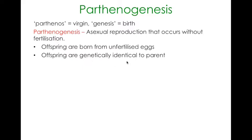Parthenogenesis mainly occurs in animals — organisms that produce eggs — and typically all offspring will be female. The reason is because the egg contains all of the structures the cell needs to survive; the sperm really just delivers the DNA. So if the egg can overcome that input of DNA from the sperm, then it will produce all female offspring, and males are completely eradicated from the picture.